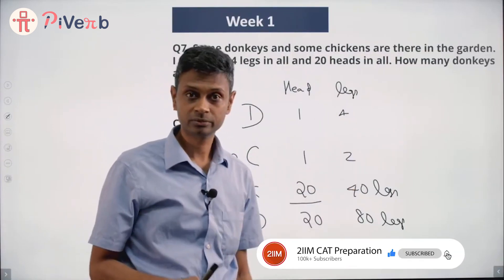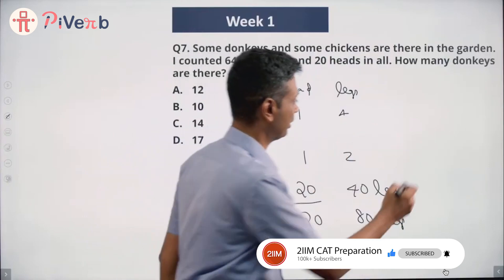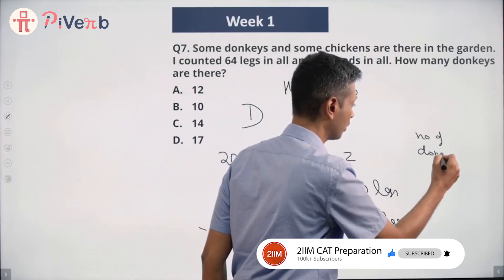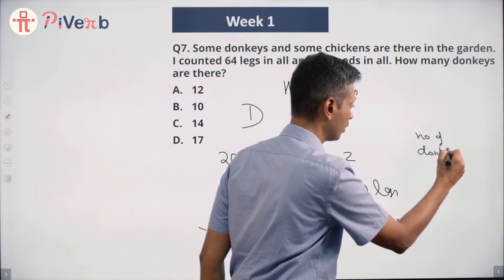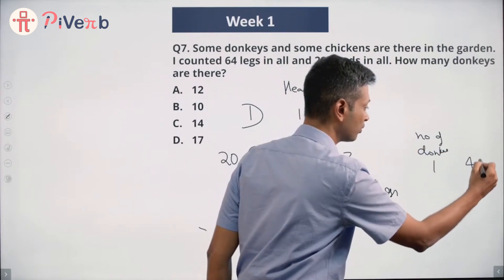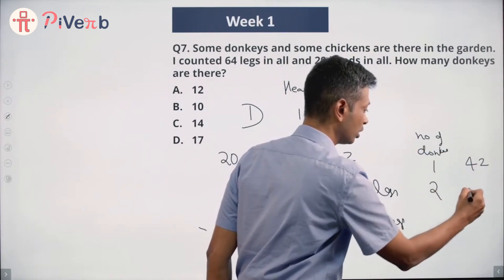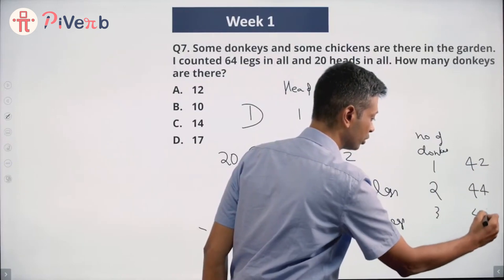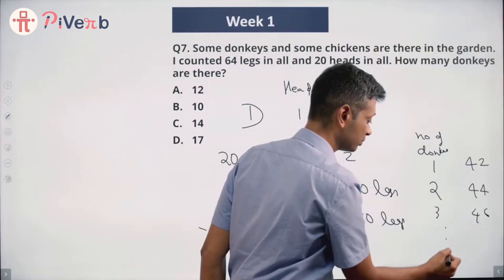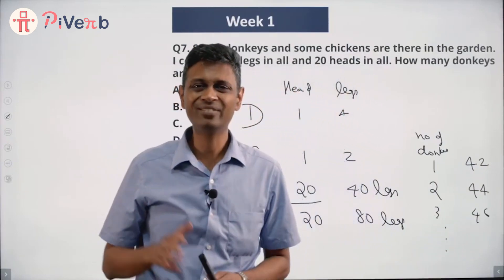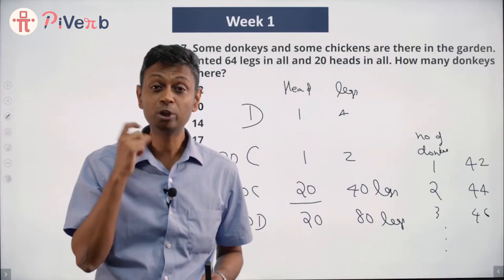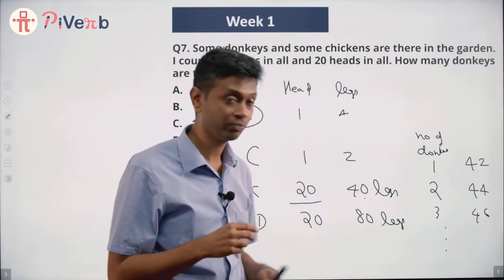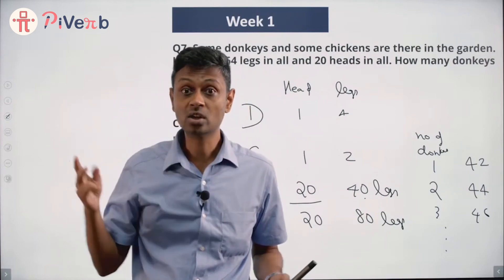If you have two donkeys I go to 44, three donkeys I go to 46, and so on. Every donkey gives me two additional legs — additional from the base of 40. I need 64 legs total, so I need 24 more legs.